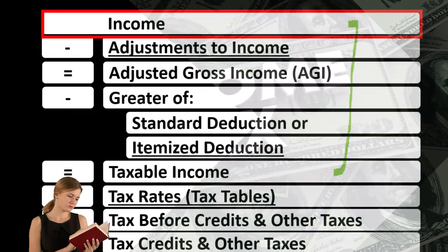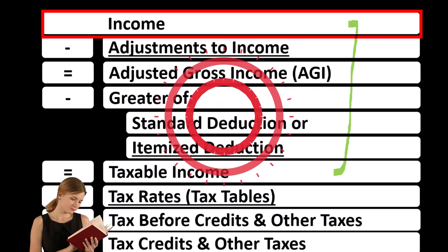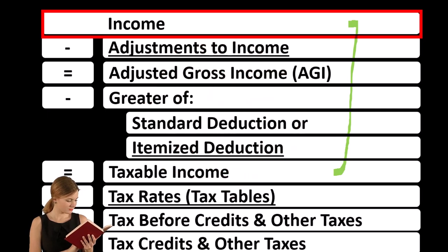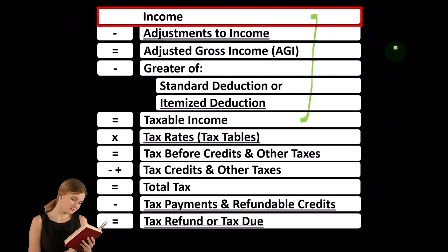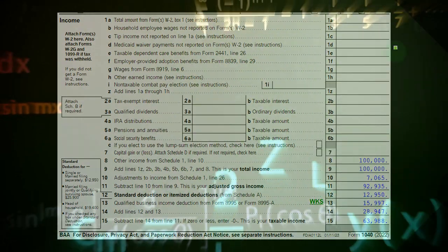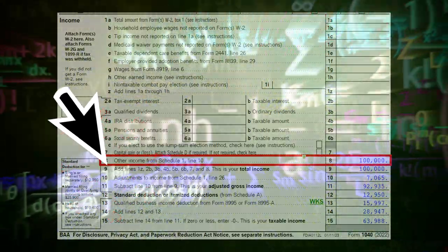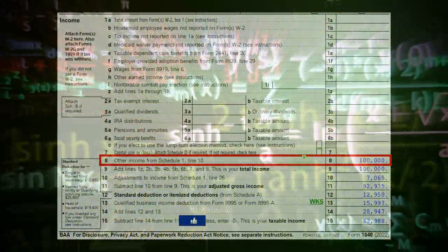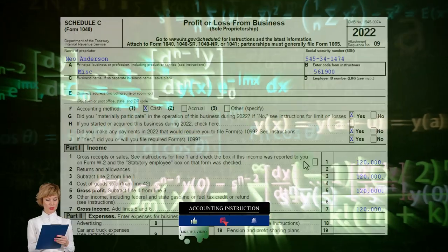For example, the Schedule C, the Small Business Form, is in essence an Income Statement in and of itself — income minus business expenses — and the net income flows into Line 1 on the Income Tax Formula. On the first page of Form 1040, we're focused on Line 8. Schedule C flows into Schedule 1, which flows into the first page of Form 1040.